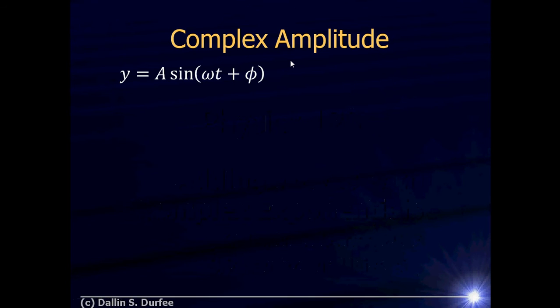So first, let's talk about the complex amplitude. Imagine I have some wave traveling down a string or a sound wave in air, and it's a sine wave represented by the function A sin(ωt + φ). Now remember, I can represent that wave as a complex exponential because my definition of complex exponential, I could take my sine wave and turn it into an exponential.